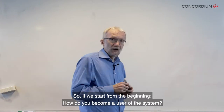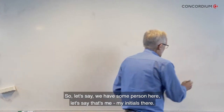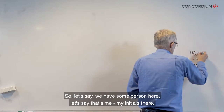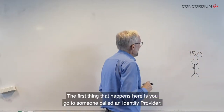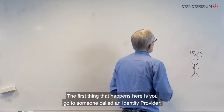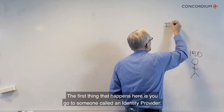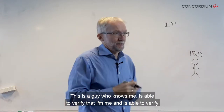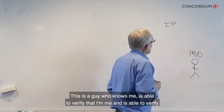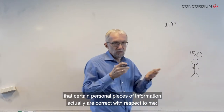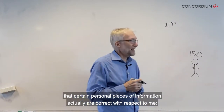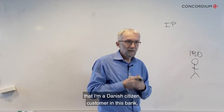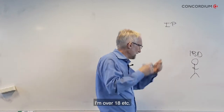So if we begin from the beginning: how do you become a user of the system? The first thing that happens is you go to someone called an identity provider, the IP. This is someone who knows you, is able to verify that you are who you claim to be, and is able to verify that certain personal pieces of information are correct — that you're a Danish citizen, a customer in a particular bank, over 18, et cetera.